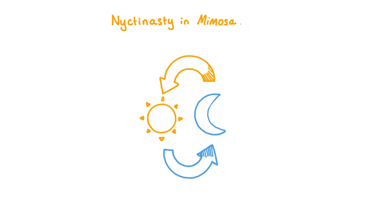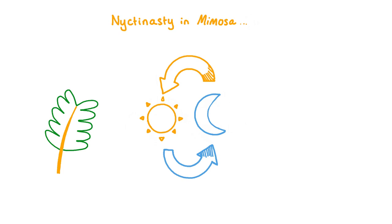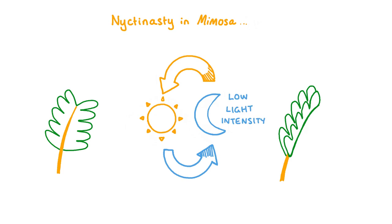Mimosa and several other plant species can also move their leaves in light-dark cycles by responding to a different stimulus: light intensity. While Mimosa leaflets are open during the day, they close at night. Photoreceptors sensitive to light detect the low light intensity as night approaches and generate an electrical signal which causes the leaflets to close. In the daytime, the photoreceptors sense the increase in light intensity and trigger the leaflets to return to their open position.